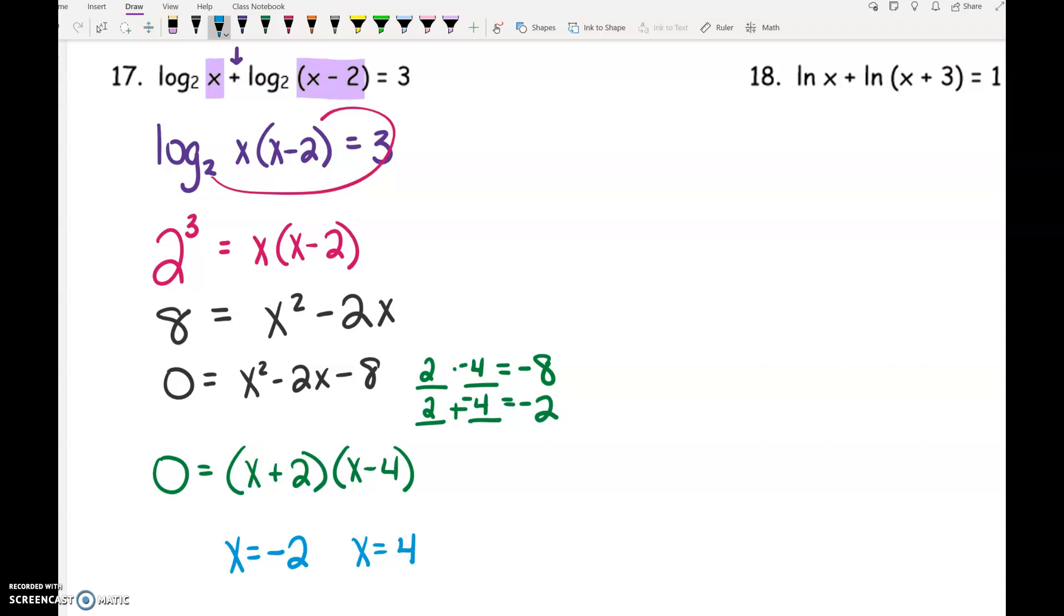The checking is especially important here. Particularly this first log in the original problem. If I put negative 2 in there, we've got log base 2 of negative 2. We can't do a log of a negative number. So that answer is crossed out. Check 4. 4 works in the first one. 4 minus 2, is that positive? Yes. So x equals 4 works.